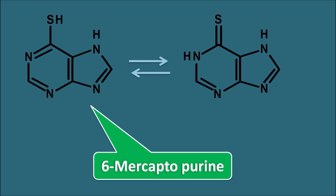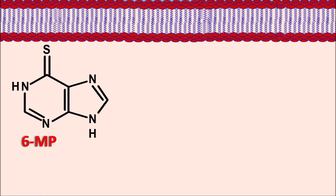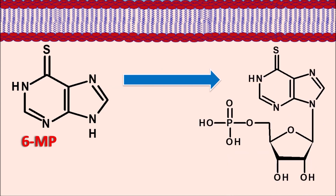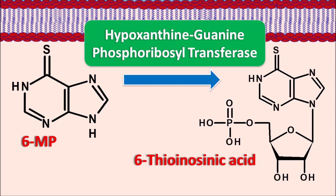Now let us see how 6-mercaptopurine acts as an anti-metabolite and how it interacts with allopurinol. 6-mercaptopurine can be converted into a false intermediate — it has only a nucleic acid base, which can be attached to a sugar moiety to form the metabolite 6-thio-inosinic acid (6-TIMP). This reaction is mediated by the enzyme hypoxanthine-guanine phosphoribosyl transferase, commonly known as HGPRT. This enzyme converts 6-mercaptopurine into 6-thio-inosinic acid, which acts as a false metabolite, thereby inhibiting the synthesis of purine nucleotides.